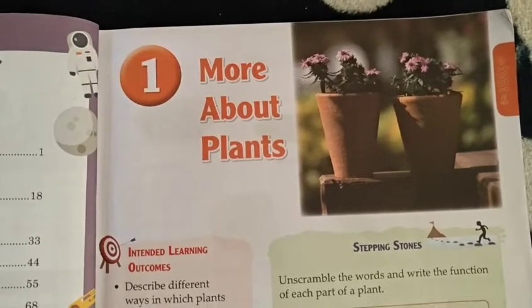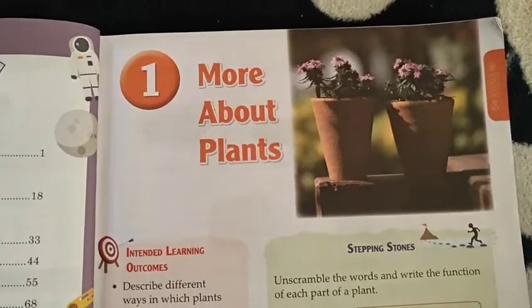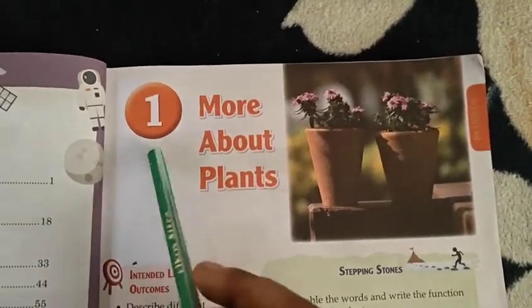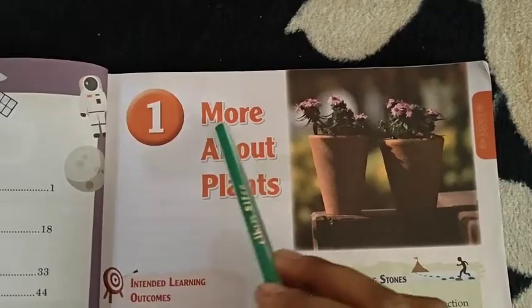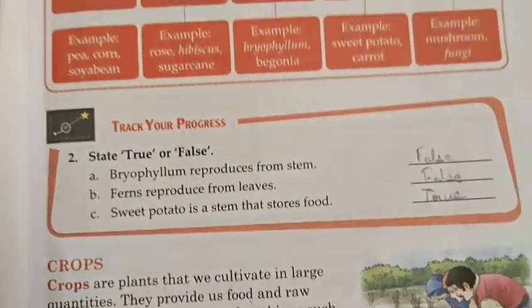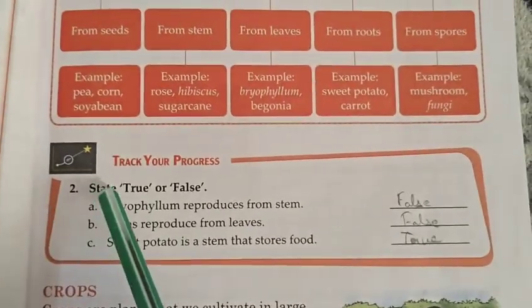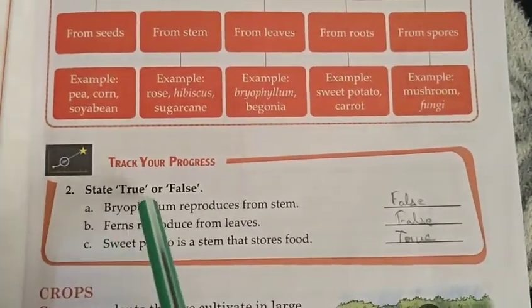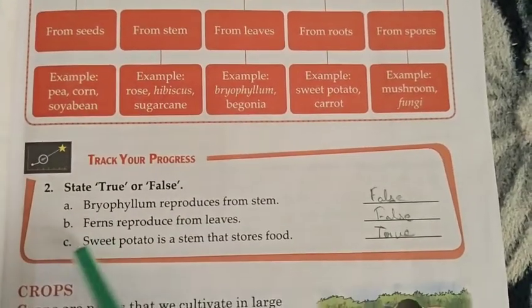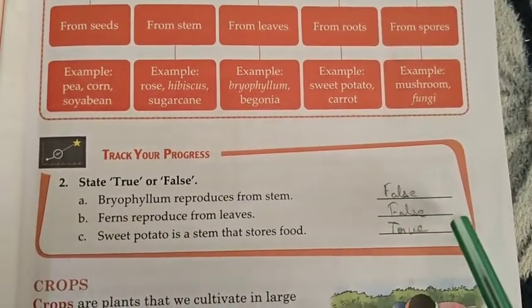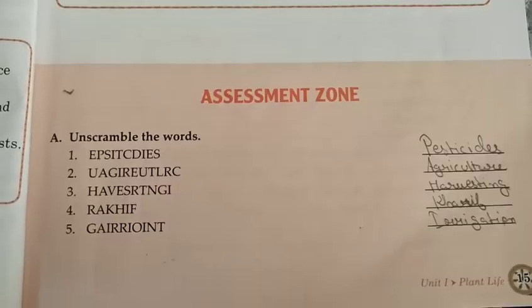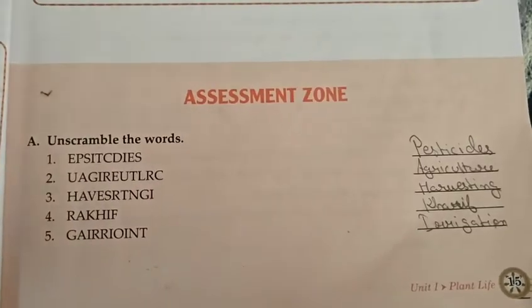Hello students, today we are going to learn the chapter of science: number one, more about plants. Number two, state true or false. Number A will be false, number B will be false, and number C will be true.